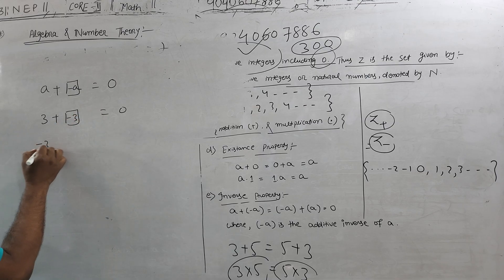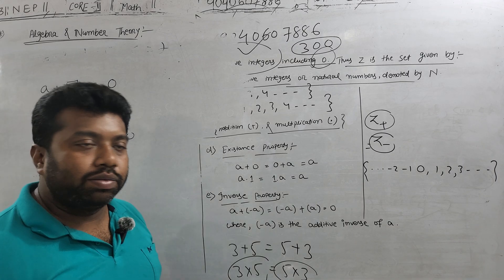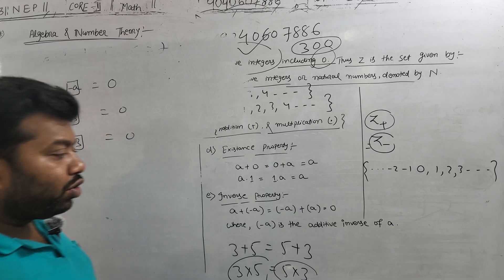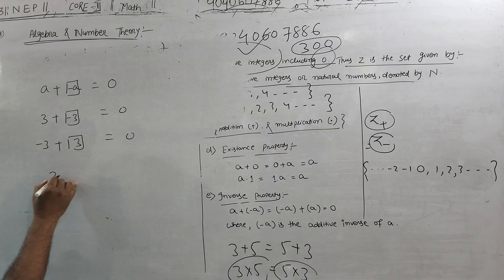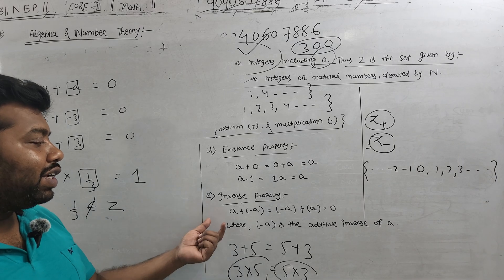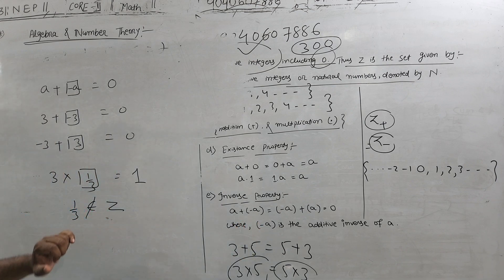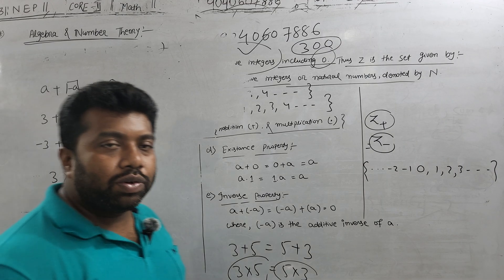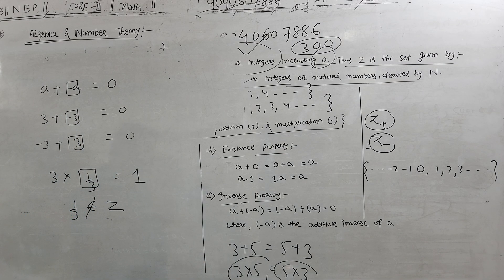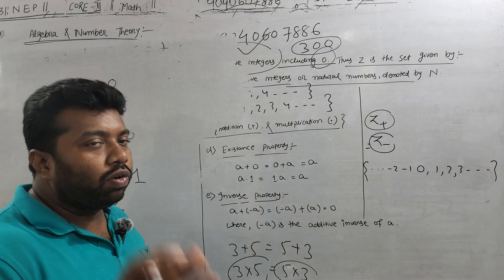Inverse property: a number add 0. Minus 3 plus 0 equals minus 3. Minus 3 plus 3 equals 0. This is additive inverse. For integers, this property is satisfied for multiplication. 3 multiply 1 gives 3, but 1 by 3 is not belongs to Z. 1 by 3 is not an integer. Additive inverse is satisfied but multiplicative inverse is not satisfied.